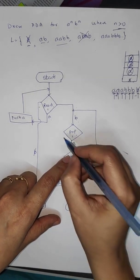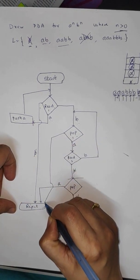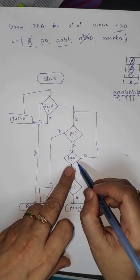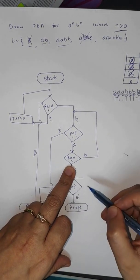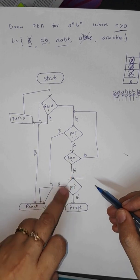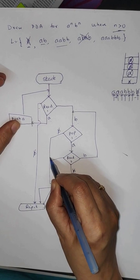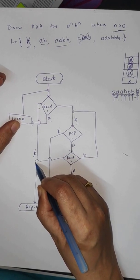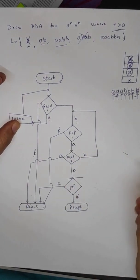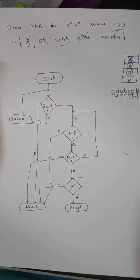When we have received a 'b' and perform a pop, it is compulsory that we should get 'a'. But if instead we get a blank, the string should be rejected. Similarly, in Read2 — which handles the remaining b's after we have started receiving b's — if we get an 'a' as input, the string should be rejected, because once you start receiving b's you should not receive any 'a'. With this, we have completed our PDA diagram.